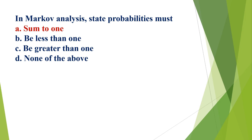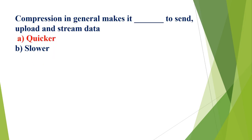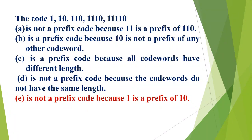In Markov analysis, state probabilities must A) sum to 1, B) be less than 1, C) be greater than 1, D) none of the above. The correct option is A, sum to 1. Compression generally makes it blank to send, upload, and stream data: A) quicker, B) slower. The correct option is A, quicker.